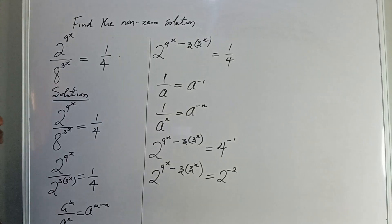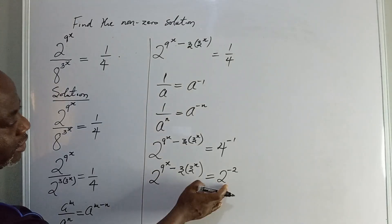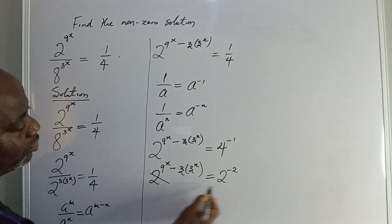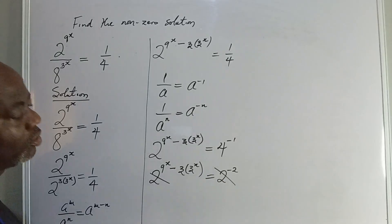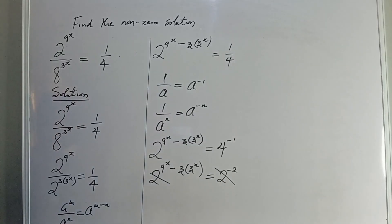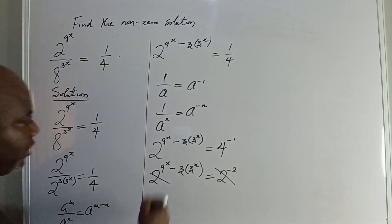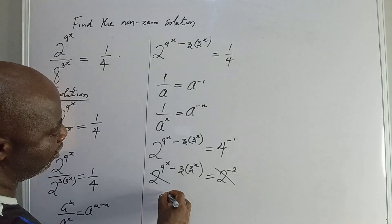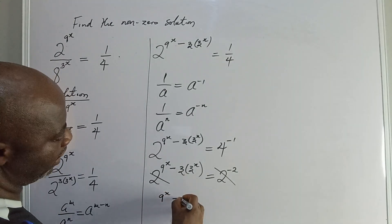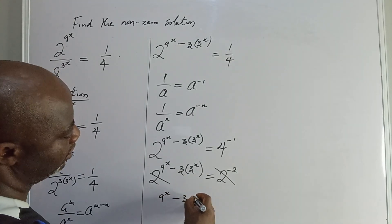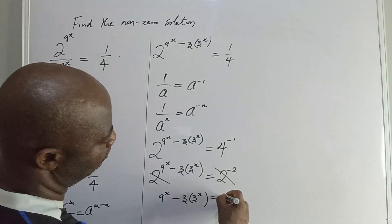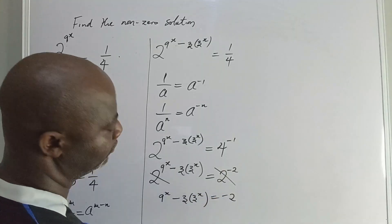You can see now that both sides are in base 2. So I will go ahead and cancel the 2 on both sides. That gives me 9 to the power of x minus 3 times 3 to the power of x equal to minus 2.